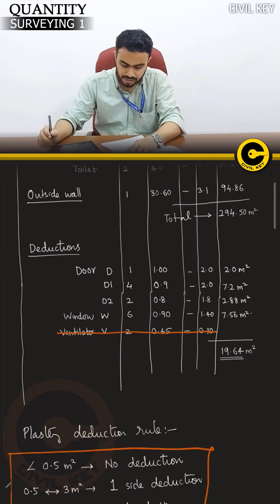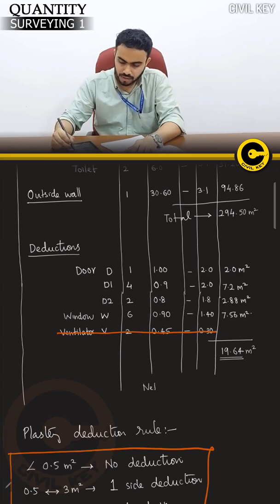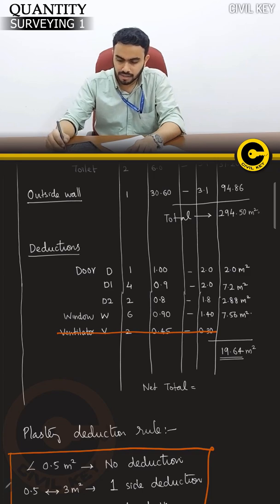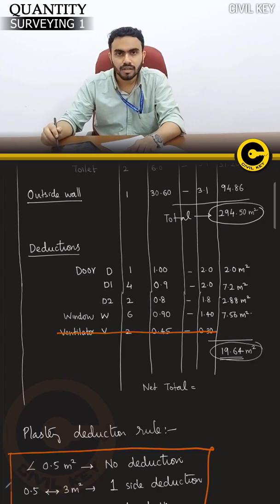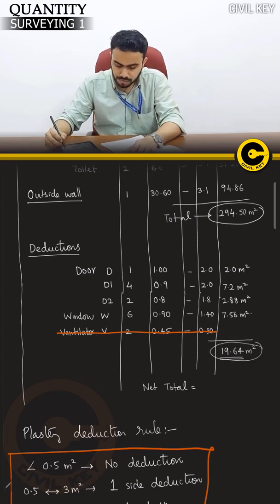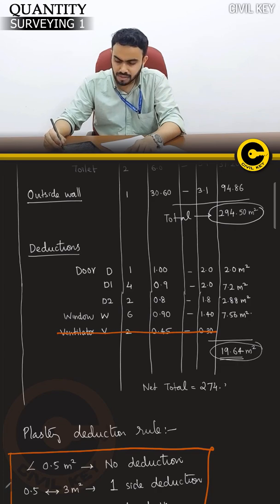Net total of plastering equals 294.5 minus 19.64, approximated to 274.8 square meters on the outside.